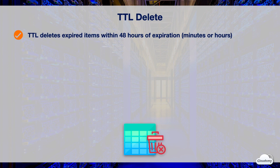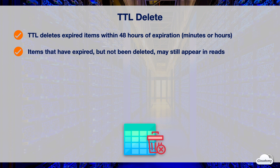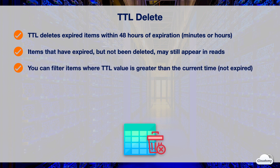TTL deletes expired items within 48 hours of expiration in a background process. Depending on the size and activity level of a table, the actual delete time can vary. Items that have expired but not yet been deleted by TTL may still appear in the results of read operations. However, you can filter out expired items by using a filter expression to find items with the TTL greater than the current time in Epoch format.